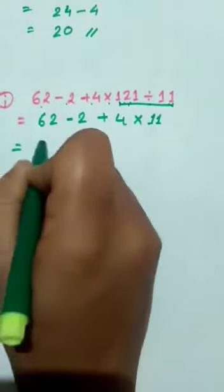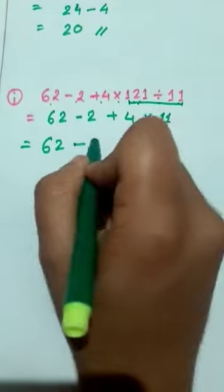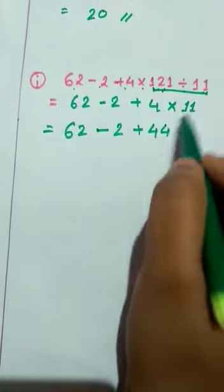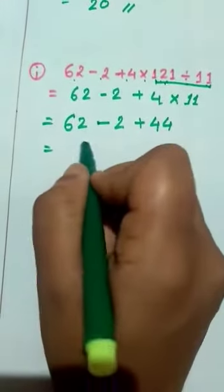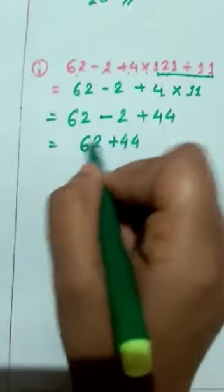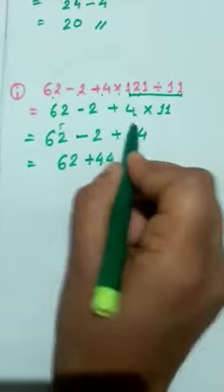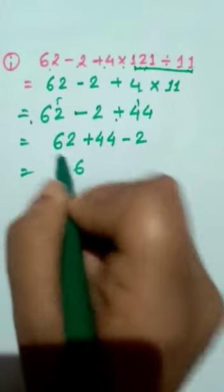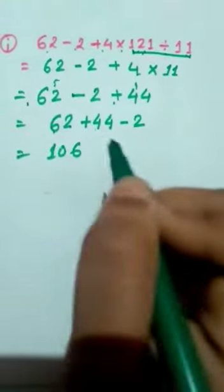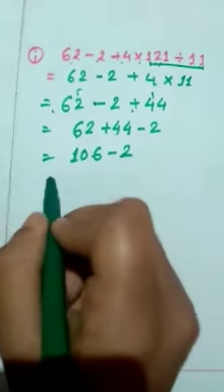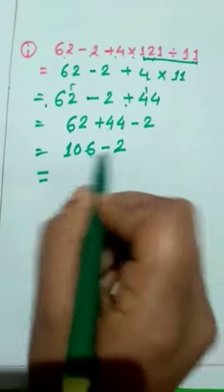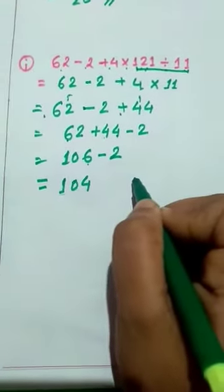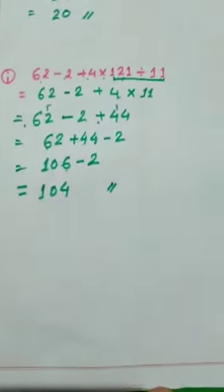After the division, we do the multiplication: 4 into 11 is 44. Now we have 62 minus 2 plus 44. Do the addition first: 2 plus 44 — that is 46; then 62 minus 2 plus 44. Adding the positives: 2 plus 4 is 6, 4 plus 6 is 10, giving 106. Then 106 minus 2: 6 minus 2 is 4, 100 stays — so the result is 104.